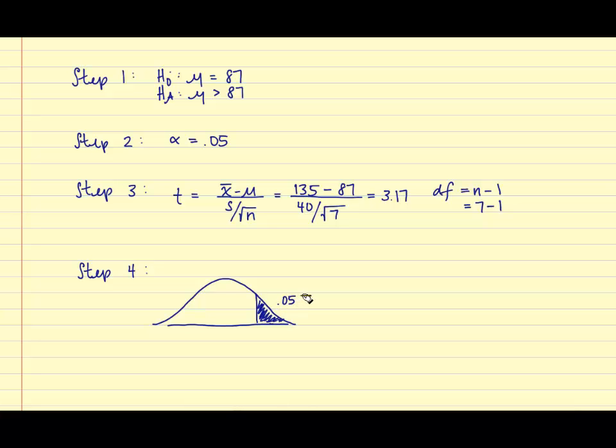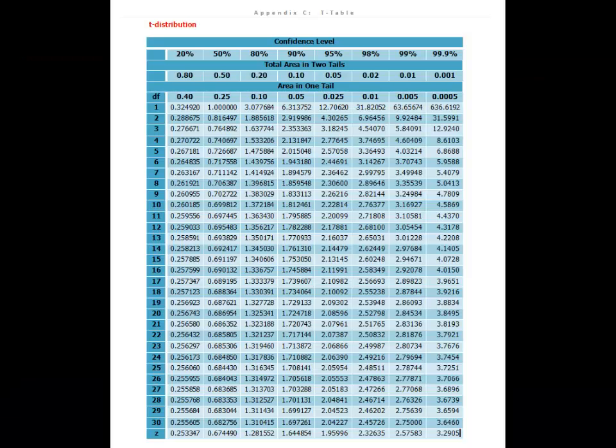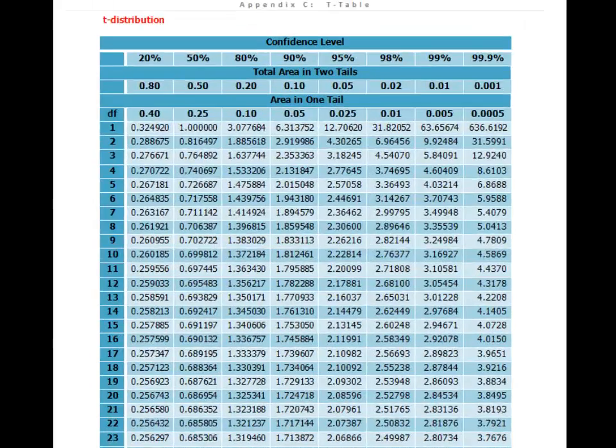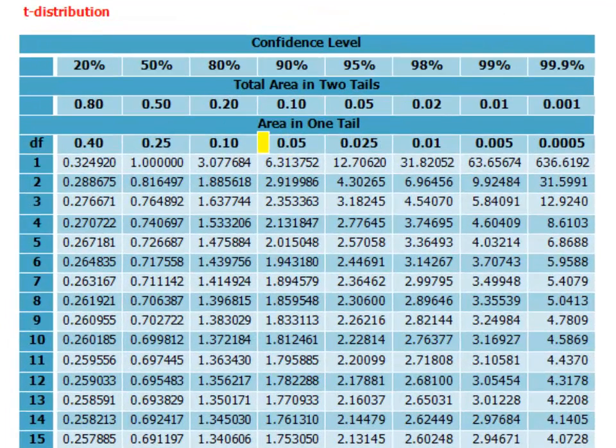And so, since this follows a t-distribution, we're going to use the t-table to find the critical value. Here is an example of the t-distribution table. The first thing you'll want to do is locate alpha, and recall alpha was 0.05. This is the area in one tail, so you want to make sure that you select the appropriate column.